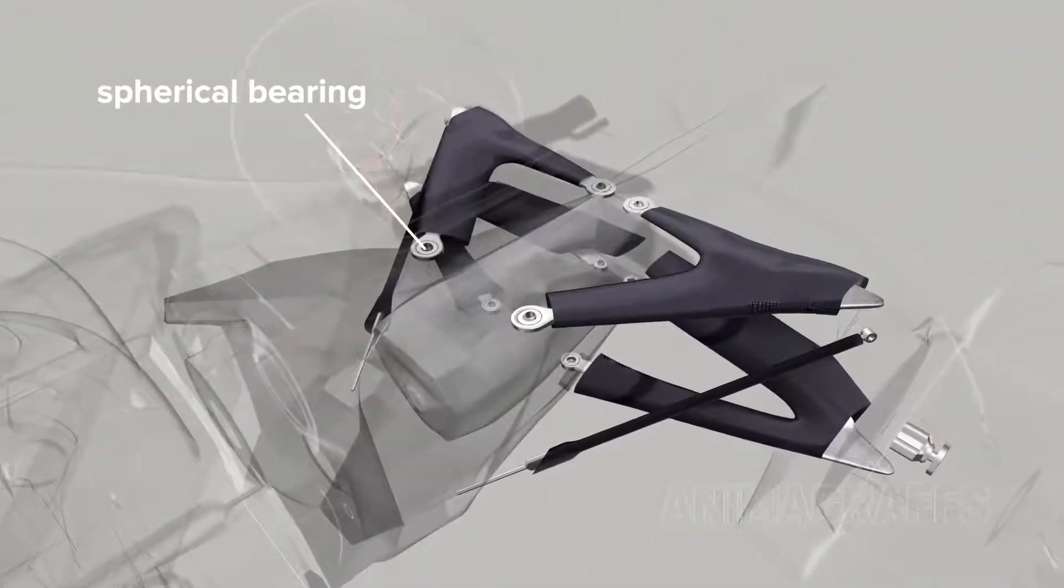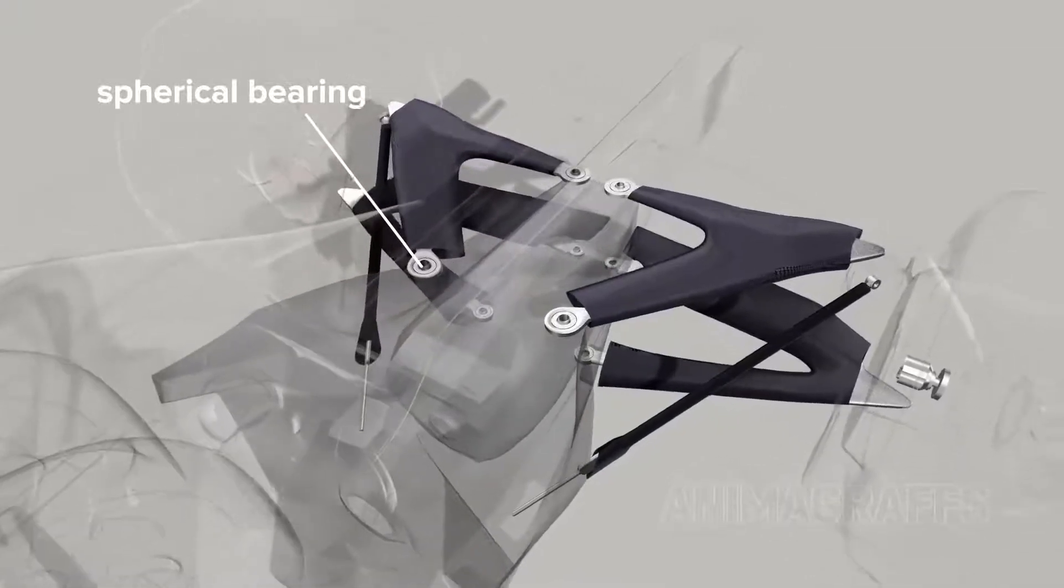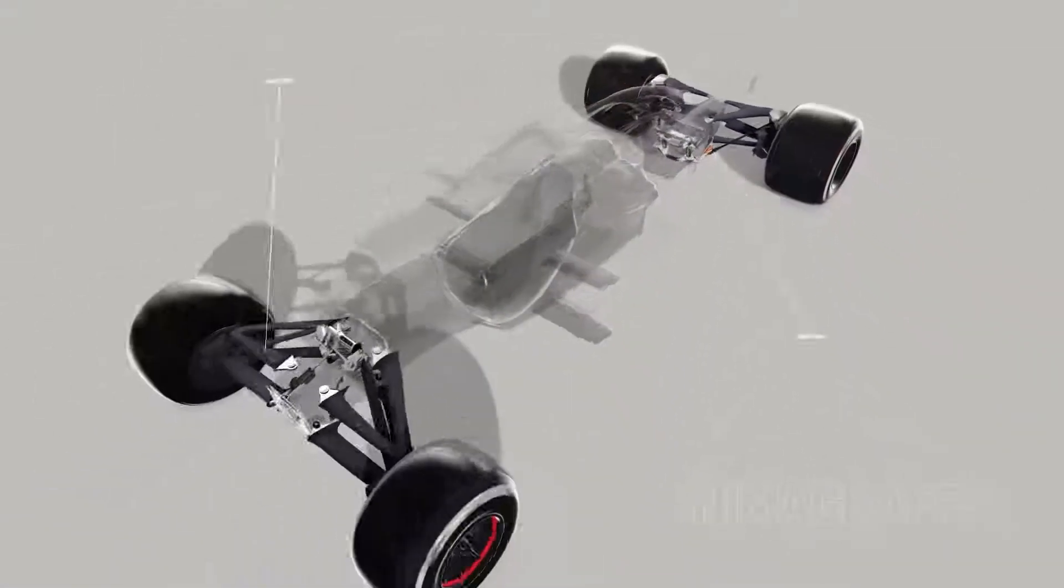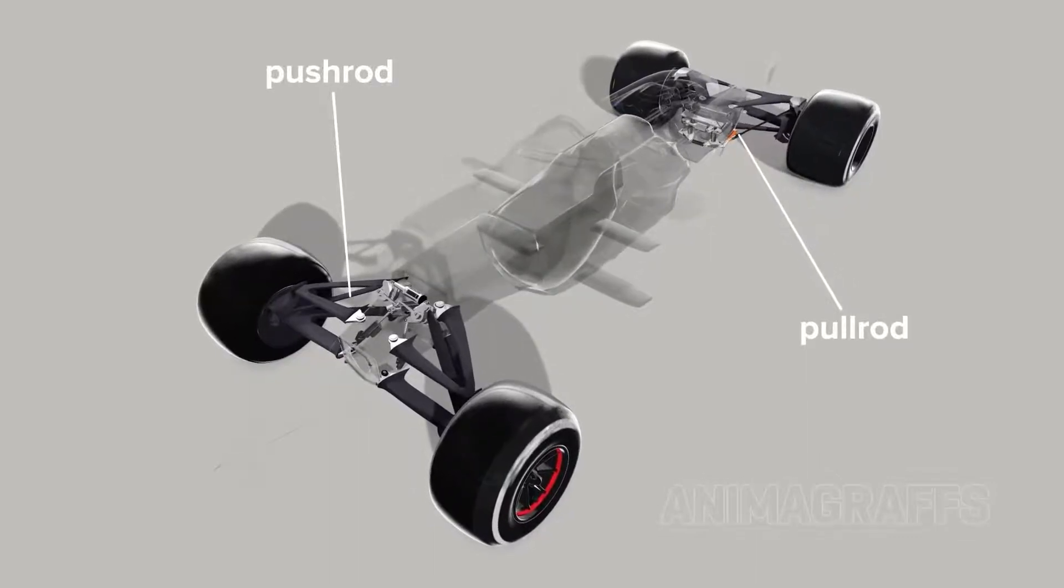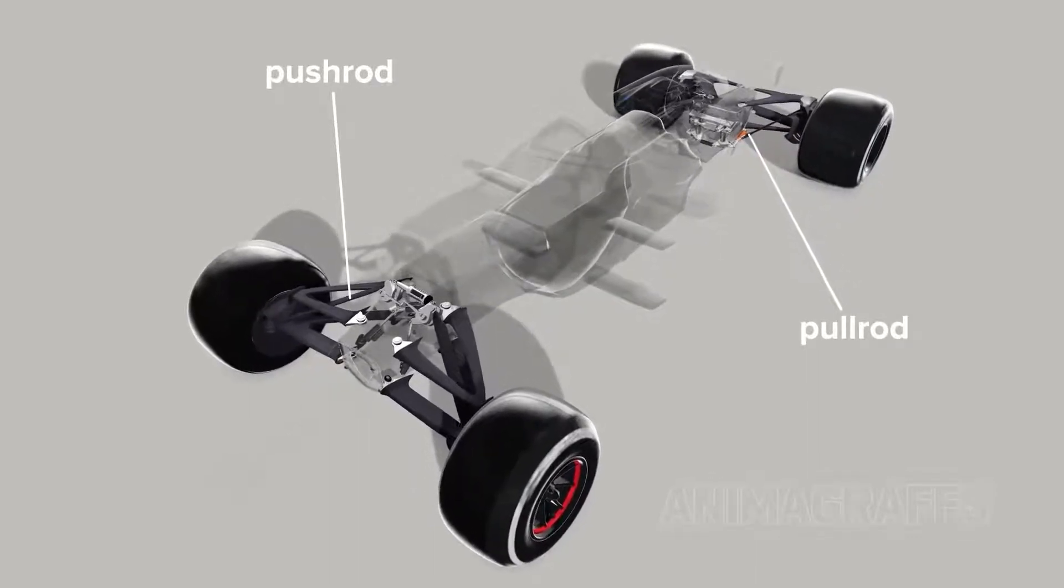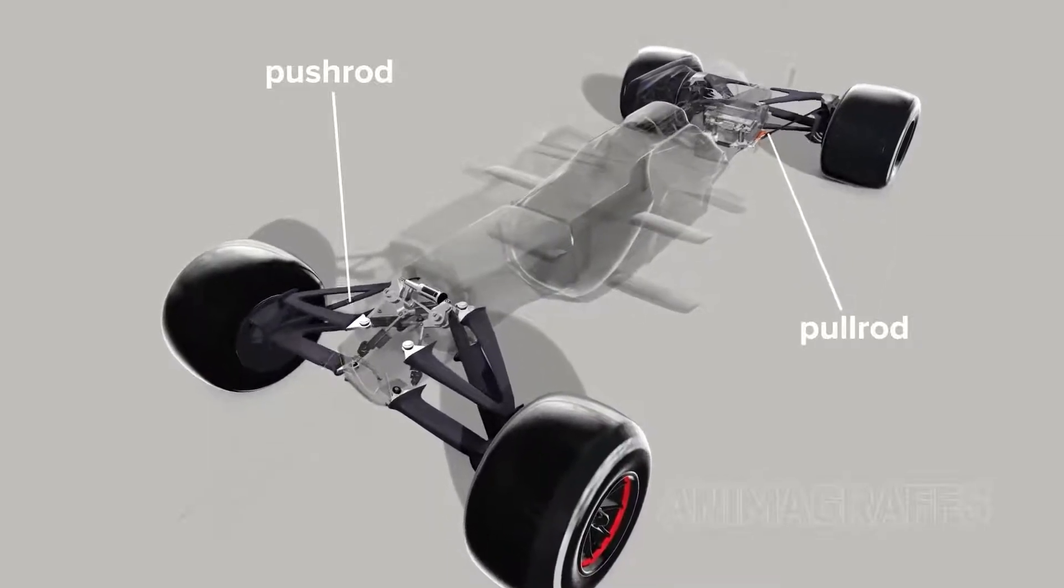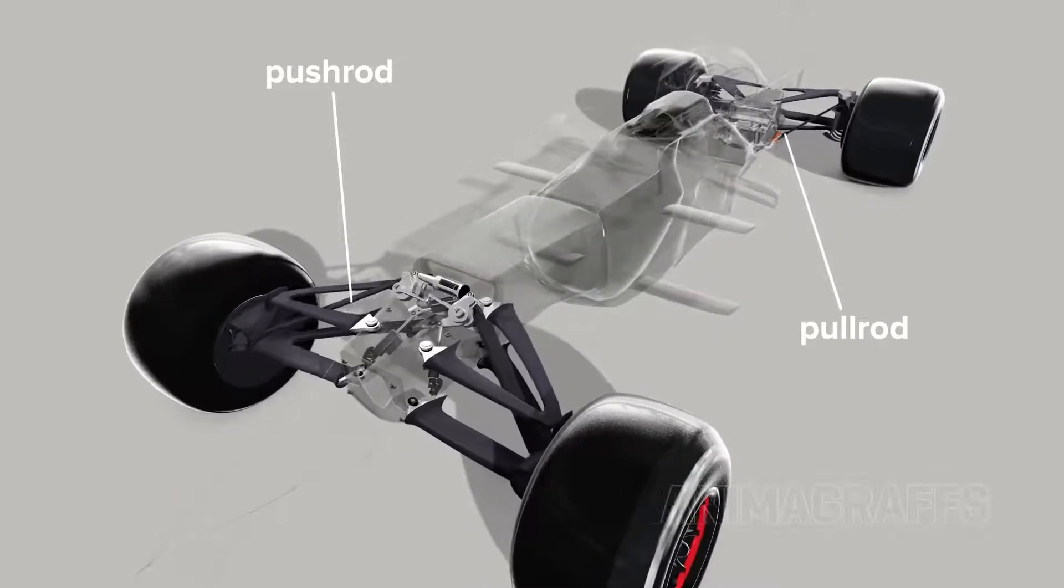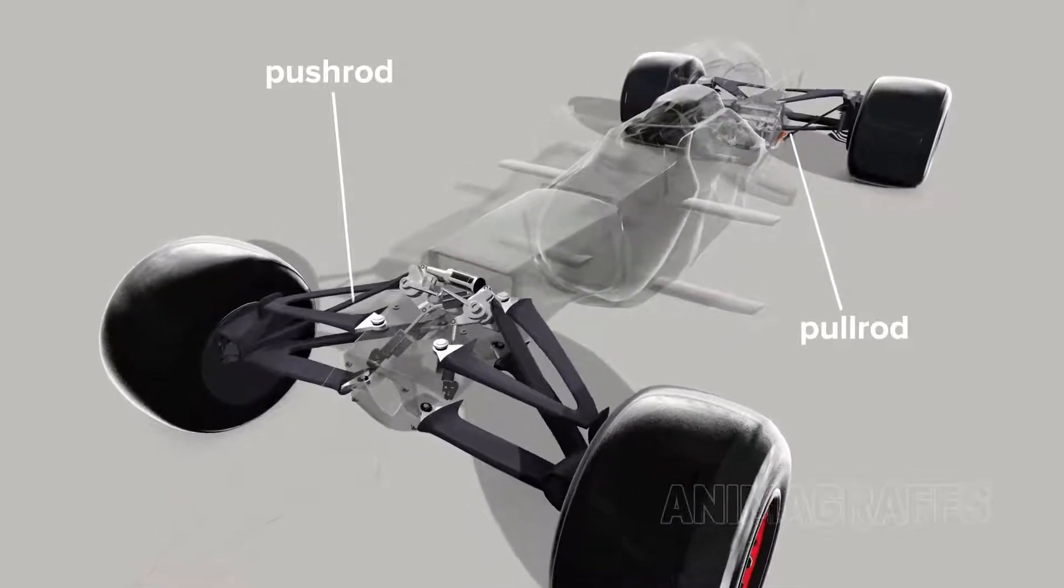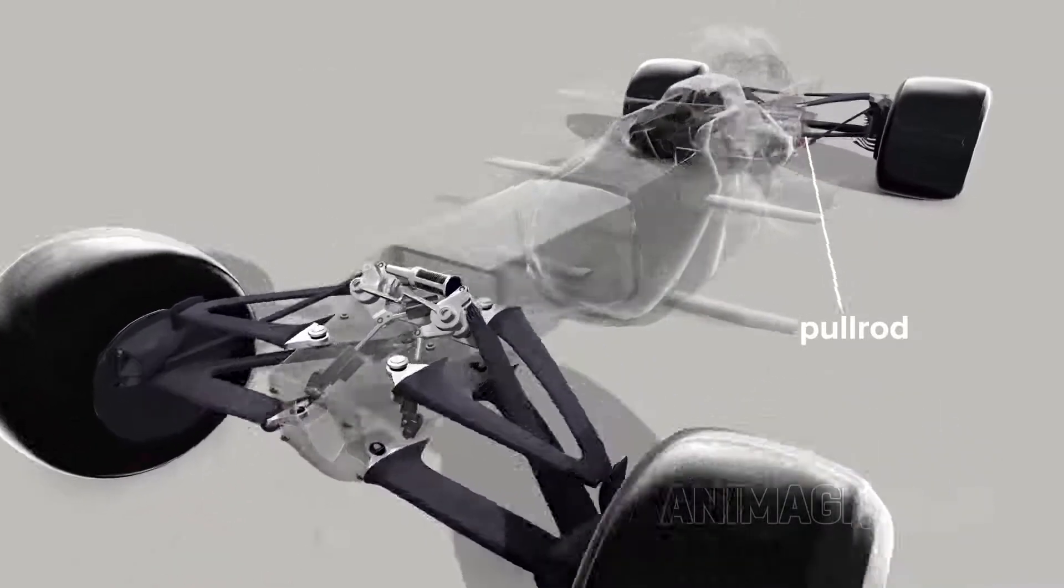At the rear, where engine heat can be intense, spherical bearings are used. The push or pull rod is where the action happens. Our model has push rods in the front and pull rods in the back, which simplified just indicates how the system is mounted, to push or pull connected suspension parts. If parts can be mounted down low for a lower center of gravity, all the better.